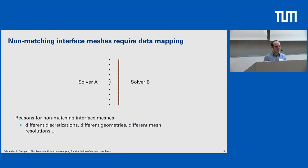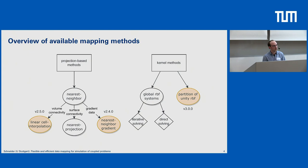The question is: how do we get there? To give you an overview of how you can do this in preCICE, I created a small map. We can categorize the mapping methods in preCICE into two high-level categories: projection-based data mapping methods on the left side, and kernel methods on the right side. I also colorized the methods which were added in either the last year or which will come in the near future.